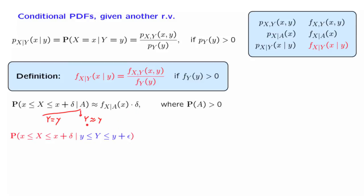What does it mean that Y is approximately equal to some particular value little y? We interpret that as follows: we're told that the random variable Y takes a value within epsilon, where epsilon is a small number, of a given value little y. Given this conditioning information, we want to calculate the probability of a small interval. Because this is in general a positive probability event, we can use the definition of conditional probabilities — it equals the probability of both events happening divided by the probability of the conditioning event.